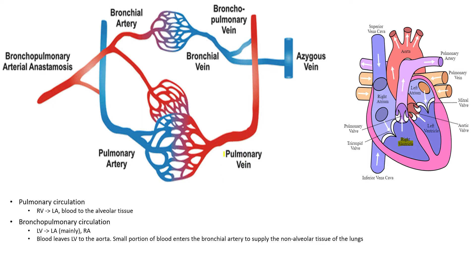This creates oxygenated blood in the pulmonary vein, and from the pulmonary vein this oxygenated blood is going to move into the left atrium — and that's our pulmonary circulation.